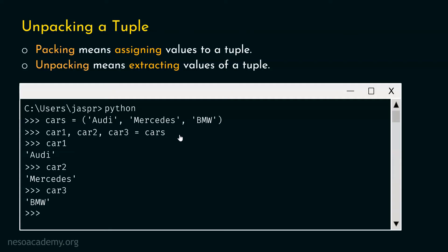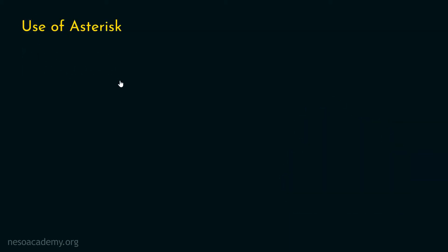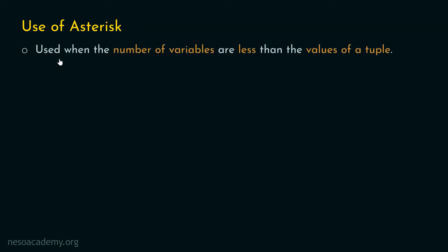The next topic is the use of asterisk in unpacking a tuple. Asterisk is used when the number of variables is less than the number of values in the tuple. If there are more values in the tuple but fewer variables, we can use an asterisk in front of the last variable, and that variable will receive all the remaining values.